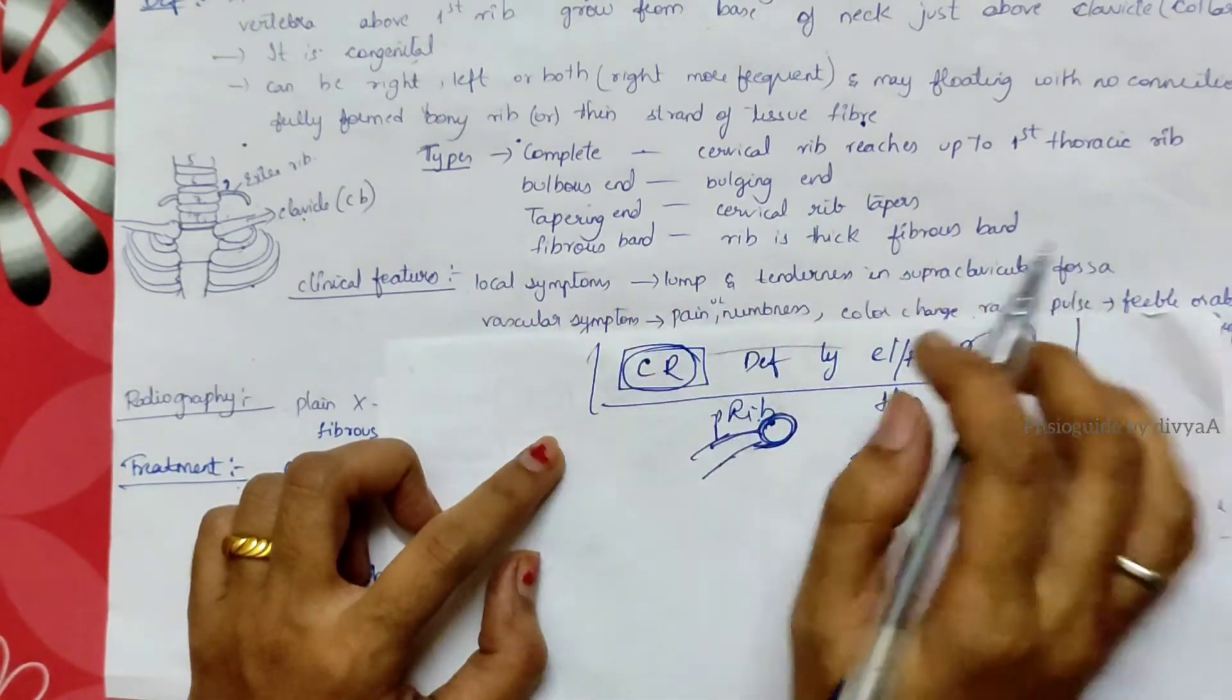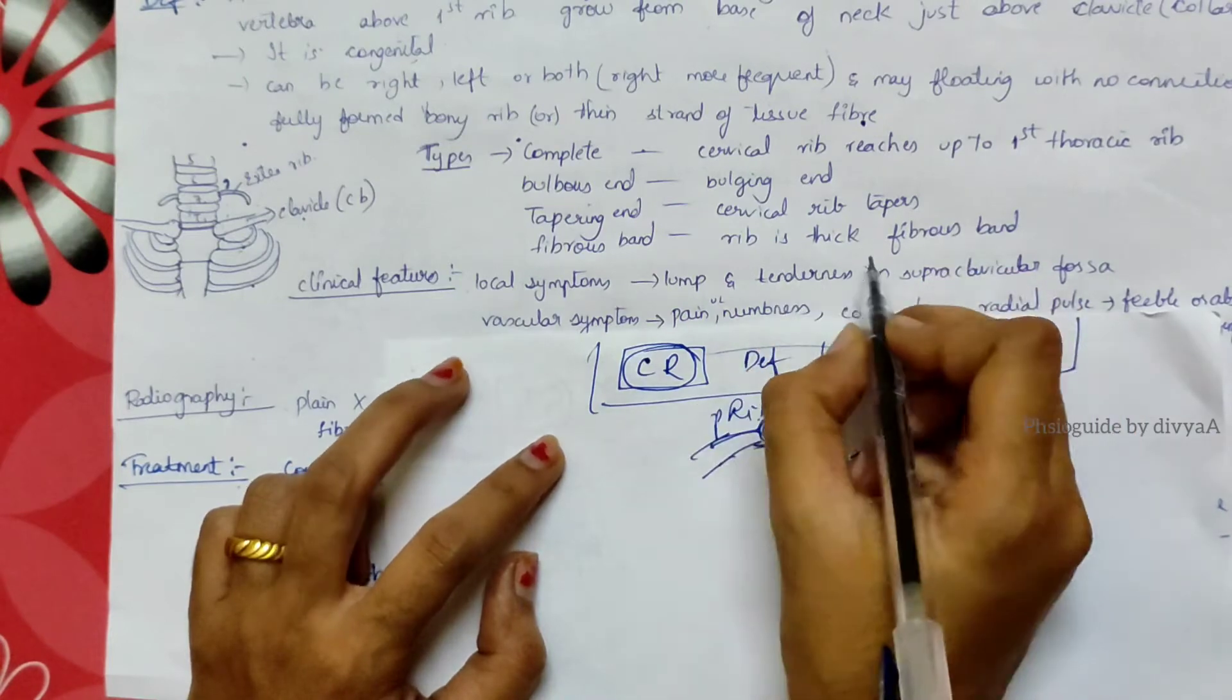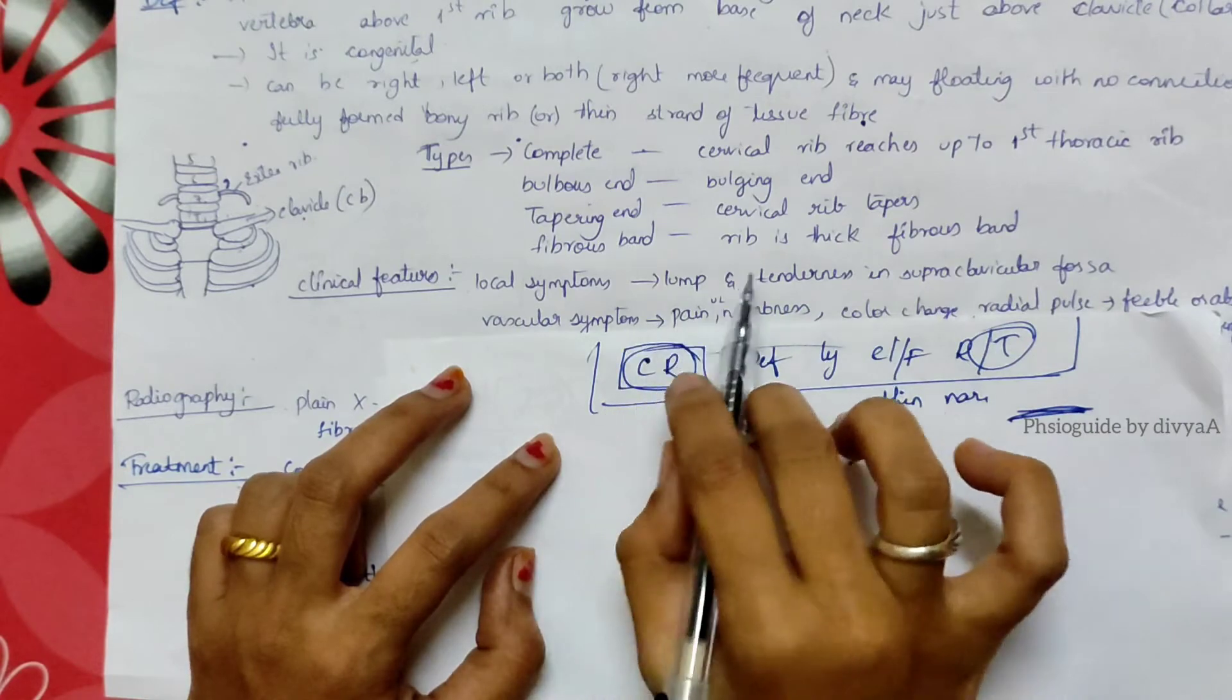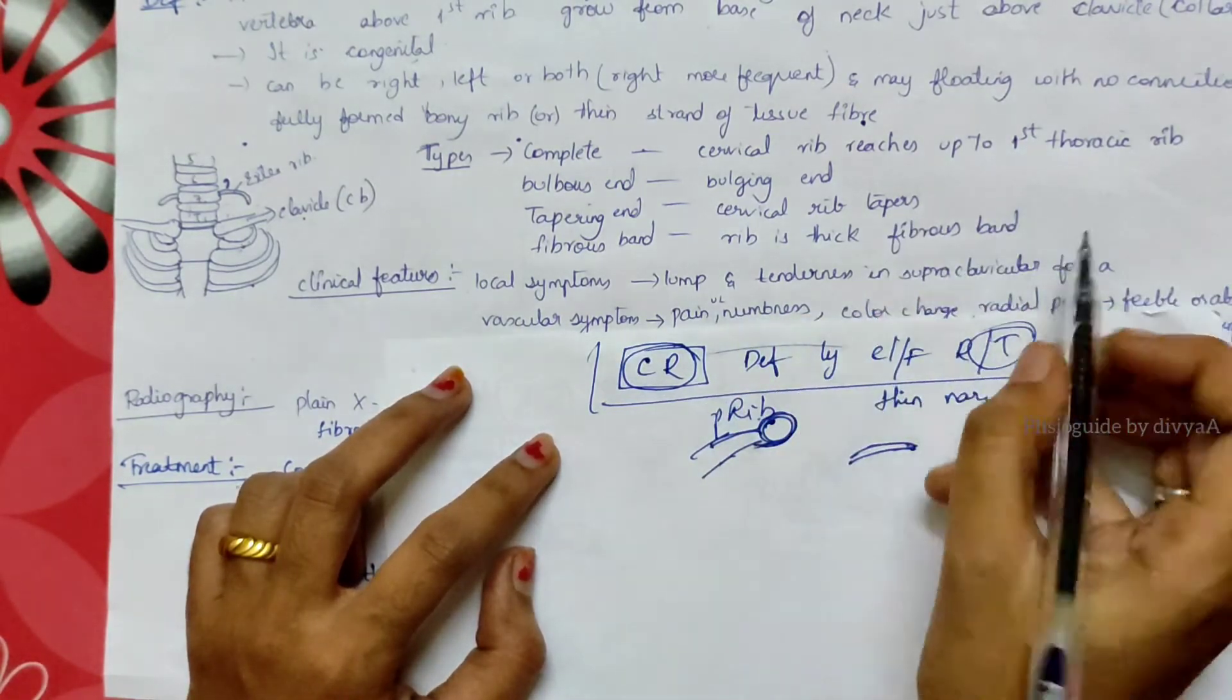Fibrous band means the rib is a thick fibrous band, like thick fiber. This is not a bone, it's a fibrous type, and it's not seen in x-ray.